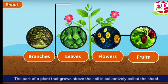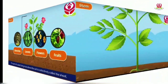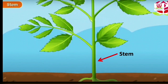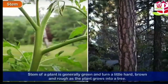Let us now learn about the stem. The stem is a very important part of the plant. The stem of a plant is generally green and thin, becoming a little hard, brown, and rough as the plant grows into a tree. The stem of a tree is called its trunk.